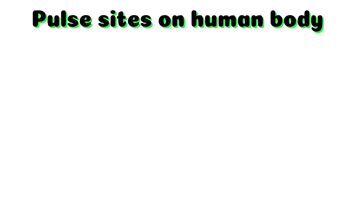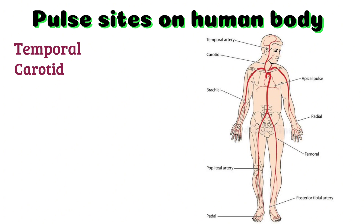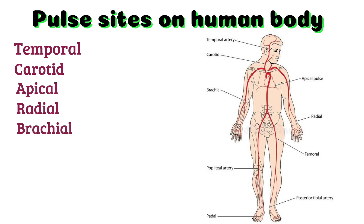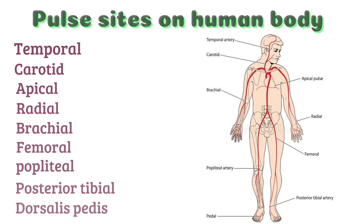There are nine common pulse points on the surface of the body: temporal, carotid, apical, radial, brachial, femoral, popliteal, posterior tibial, and dorsalis pedis. Now let's discuss them one by one.